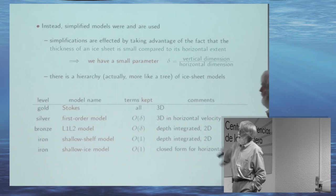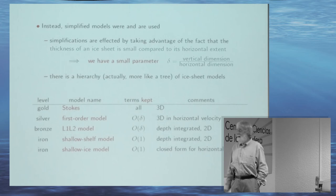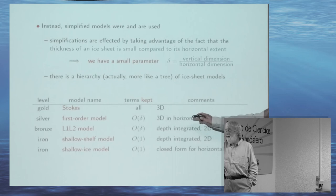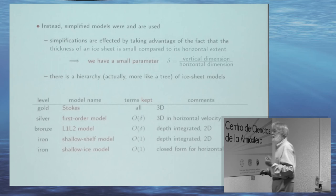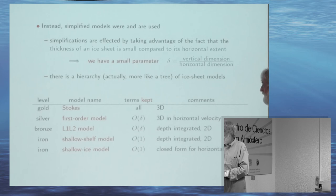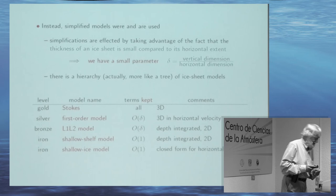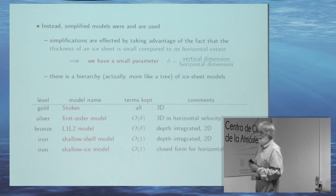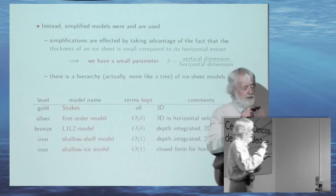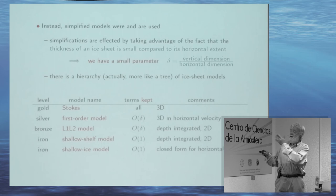There are models where you keep the order-delta terms, so your error is order delta squared — the so-called first order model, even though it's second-order accurate. It's also a 3D model, but the pressure uncouples from the velocity in the Stokes equations, so you can solve for the horizontal velocity separately. There's also a shallow ice model — equivalent to the same dimensional analysis you do to get from Navier-Stokes to shallow water. And there's a different model that holds for shelves, where the ice interacts with the ocean. So there's a hierarchy of models.